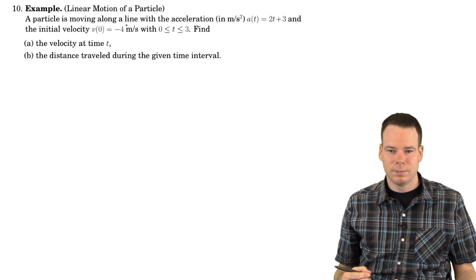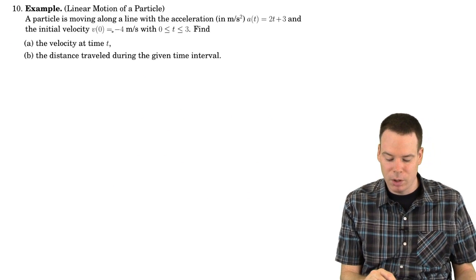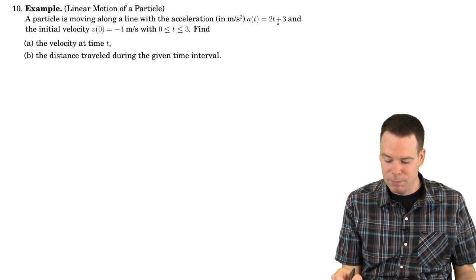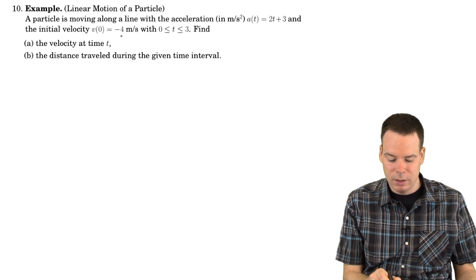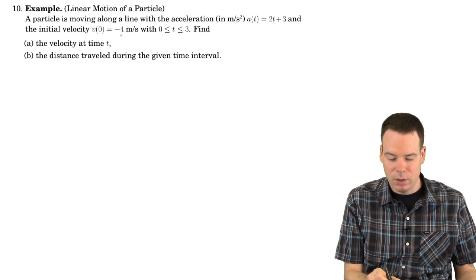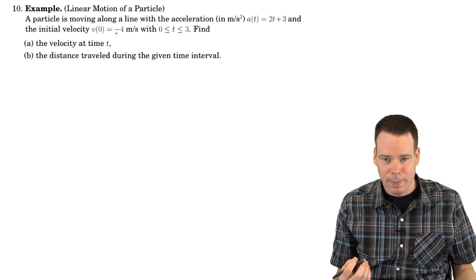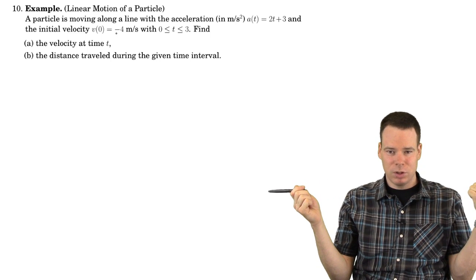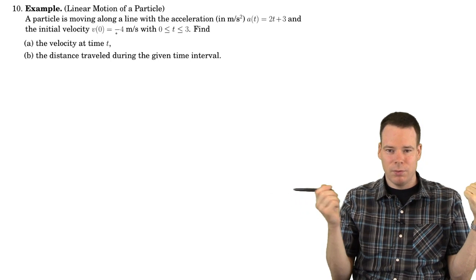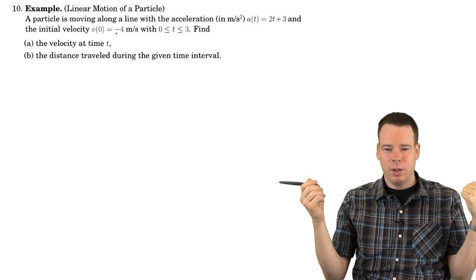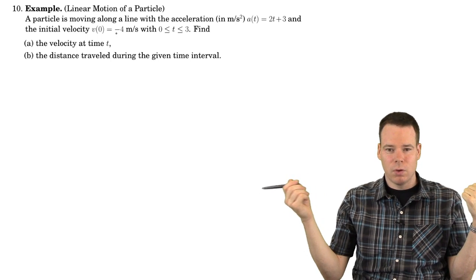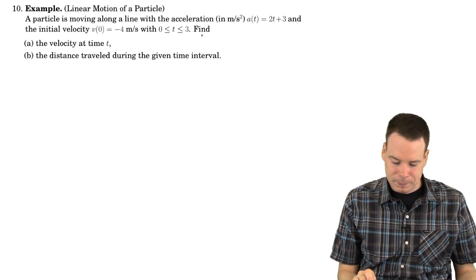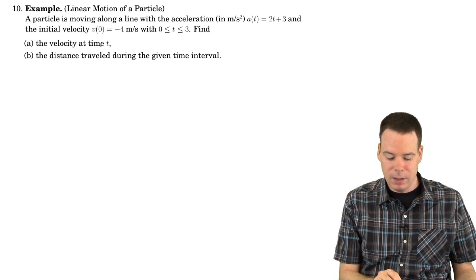Let's look at another example from physics: a particle moving along a line where we're given its acceleration. The acceleration at time t is a(t) = 2t + 3, and the initial velocity is negative 4 meters per second. The negative in the velocity indicates direction — if positive is to the right, then v(0) = -4 means the particle is traveling to the left at 4 meters per second. We want to find the velocity v(t) at time t.